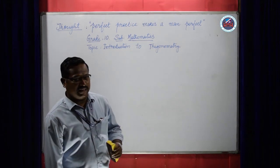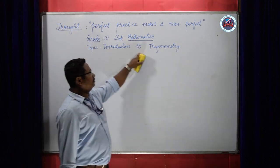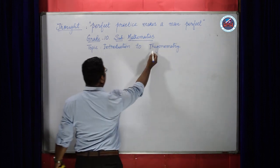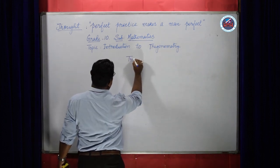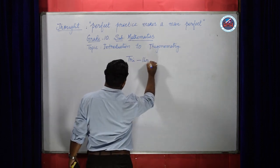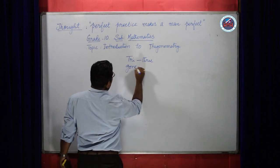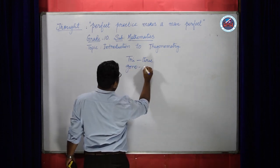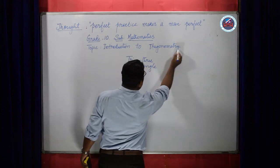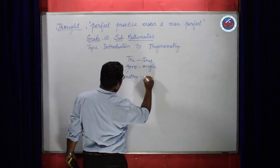Today the topic I have selected is introduction to trigonometry. The word trigonometry indicates three things: 'tri' means three, then 'gono' indicates angle, and the last part 'metry' indicates measurement.